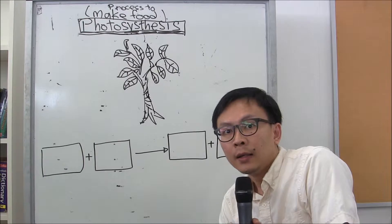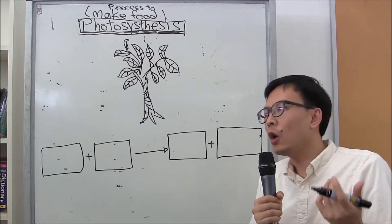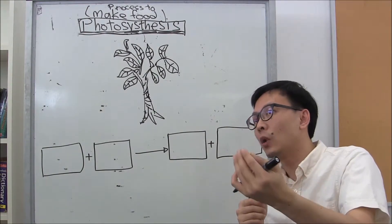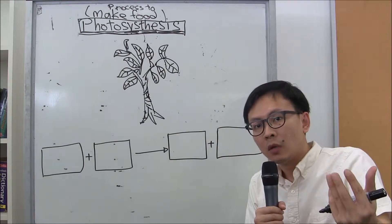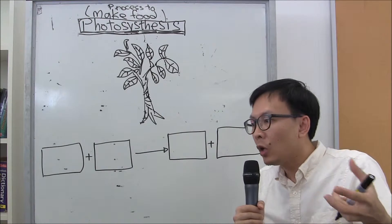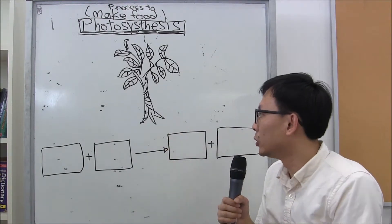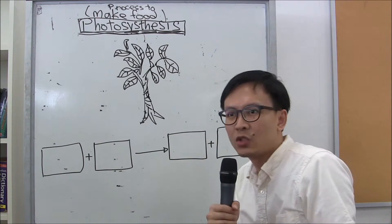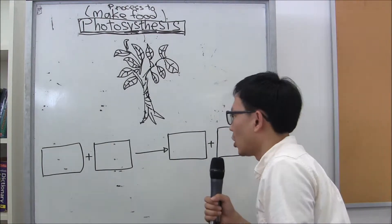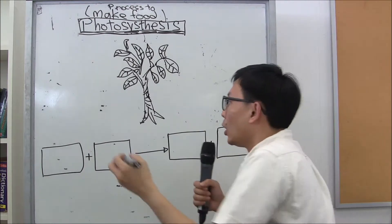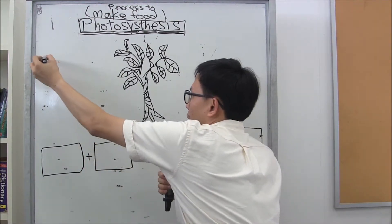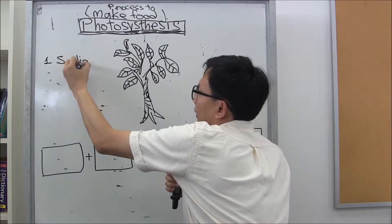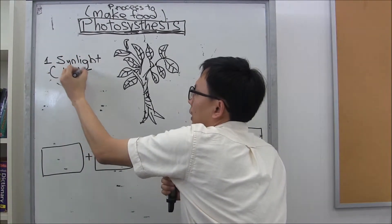Now, in order for photosynthesis to occur, there are a few conditions required. We all know that the sun is the main source of energy, and plants need sunlight — or rather, the light energy from the sun — as one of the conditions required for plants to make food. So the first condition is sunlight, or light in general. You need light energy.